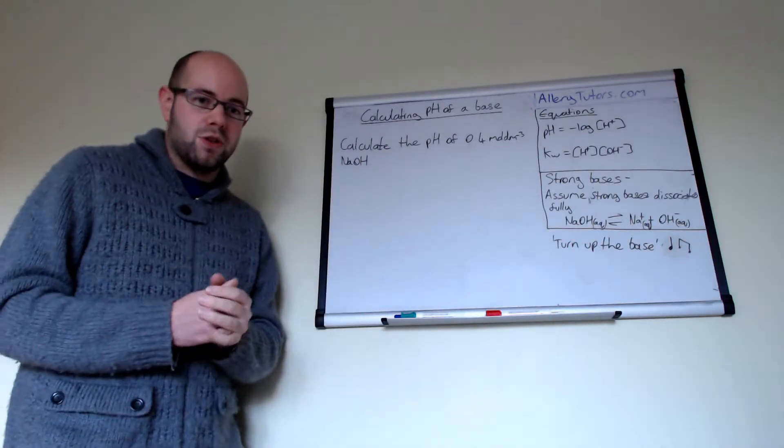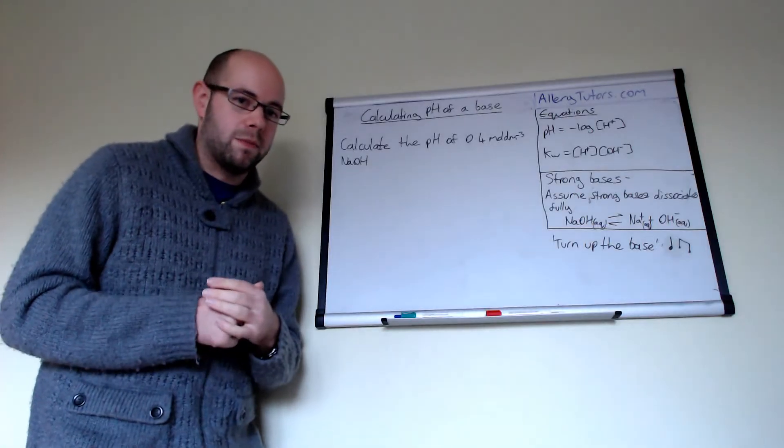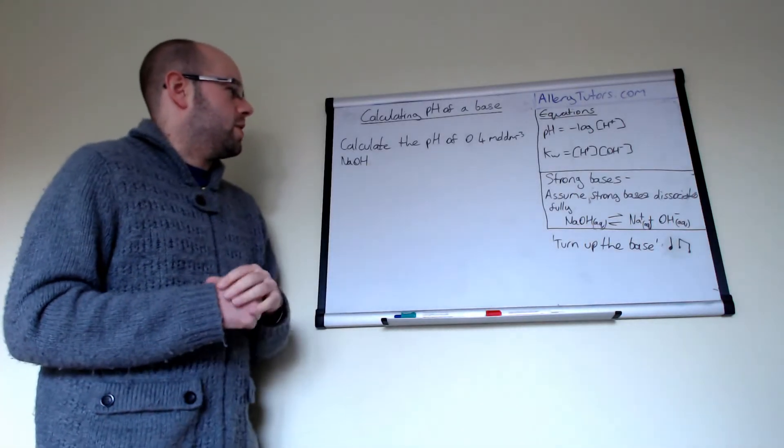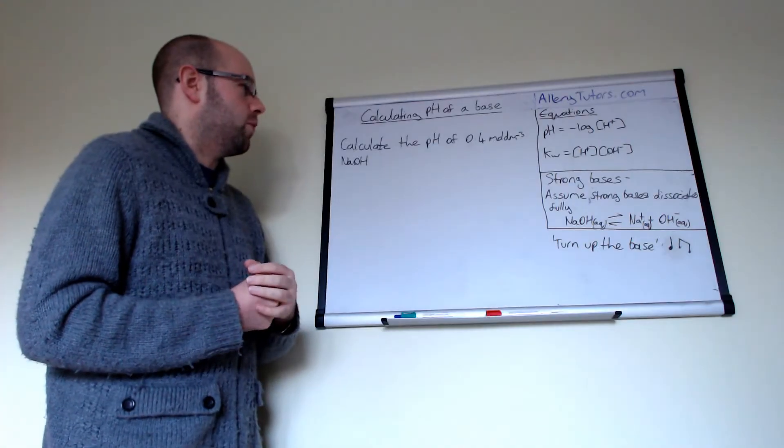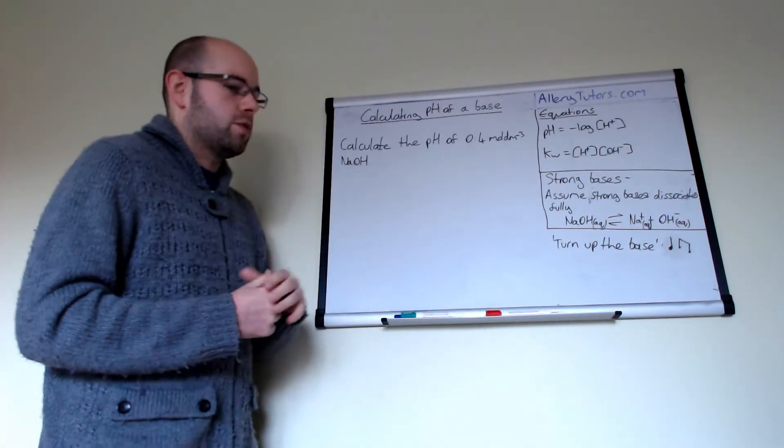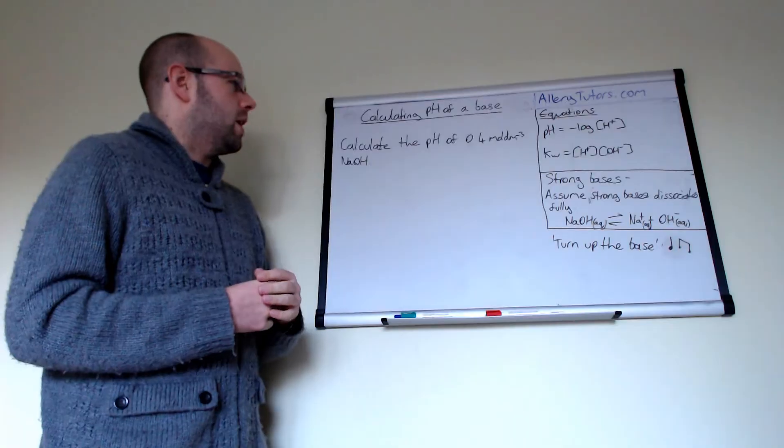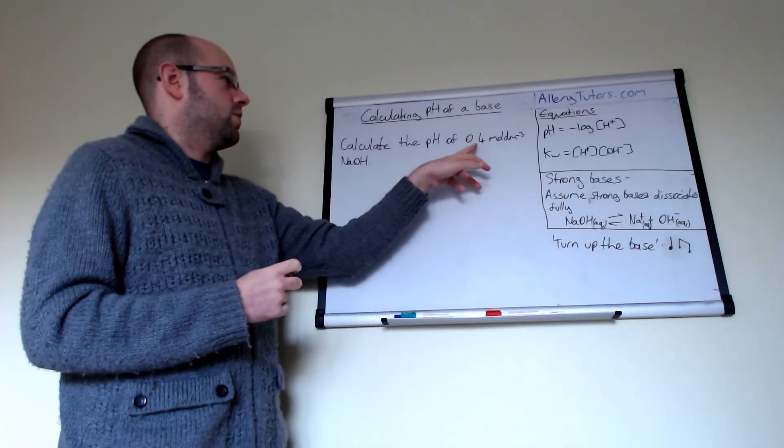If we can make that assumption, it makes our calculations a lot more simpler. We're going to look at this question here and it says, calculate the pH of 0.4 moles per dm cubed of sodium hydroxide. They've given us a concentration of sodium hydroxide.